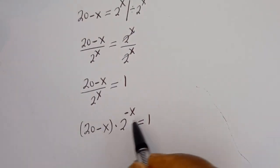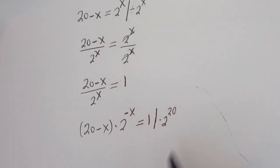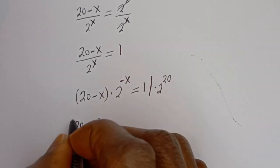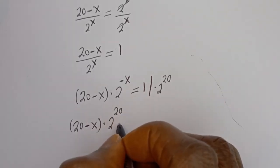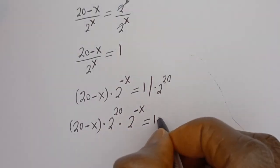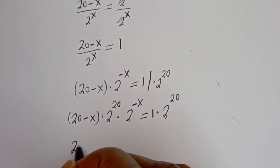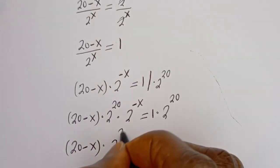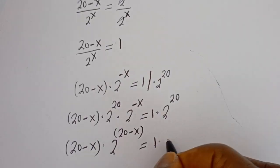Now, to make this fit the Lambert W form, let's multiply through by 2 to the power of 20. So we have 20 minus x multiplied by 2 to the power of 20 multiplied by 2 to the power of minus x is equal to 1 multiplied by 2 to the power of 20. This gives us 20 minus x multiplied by 2 to the power of 20 minus x is equal to 2 to the power of 20.